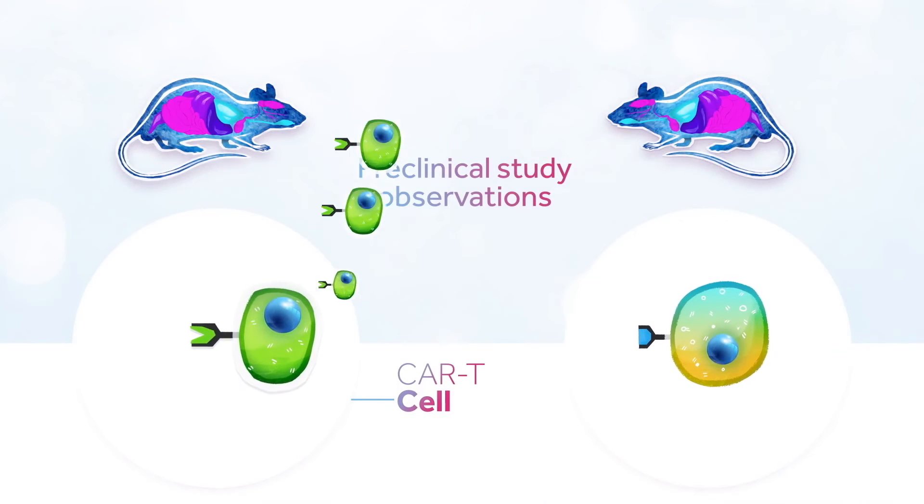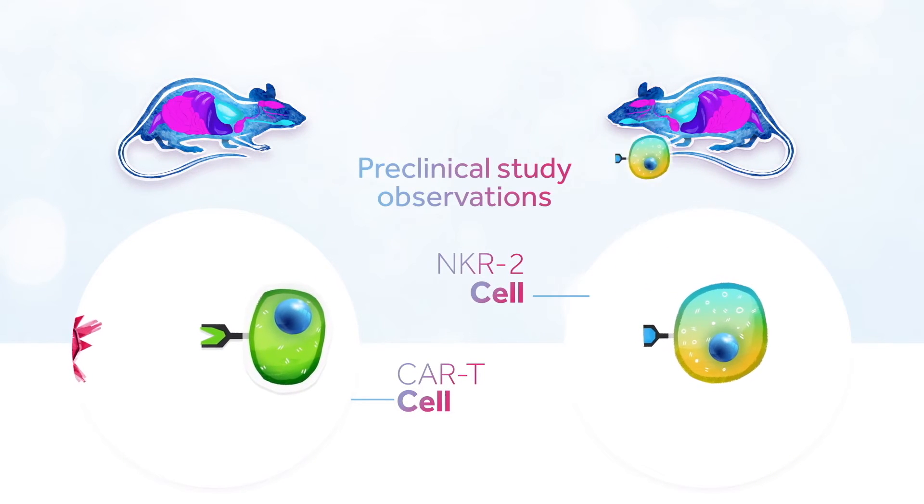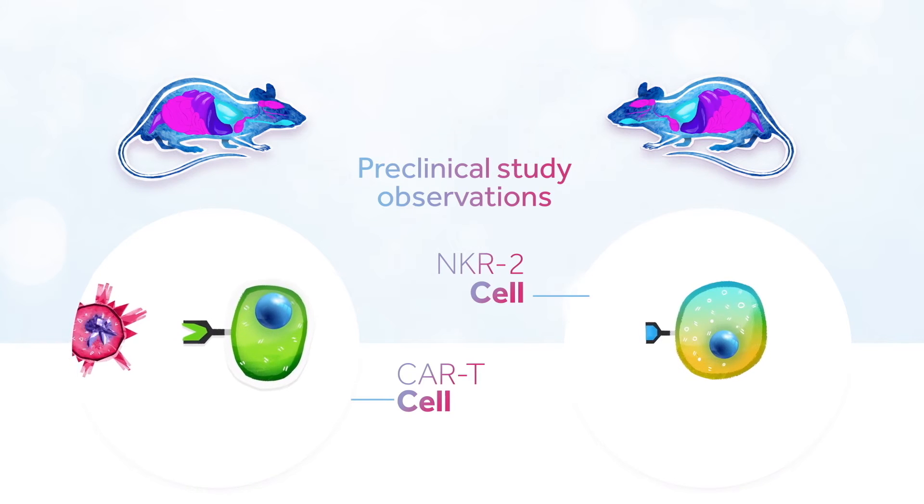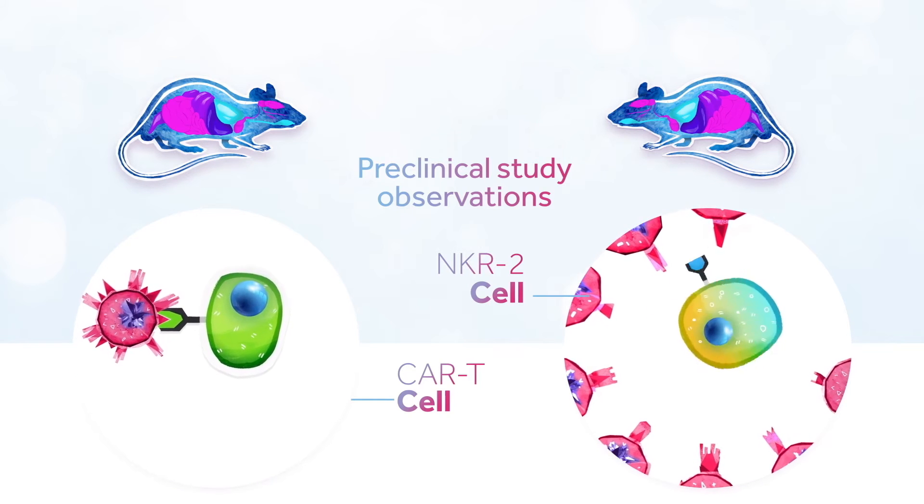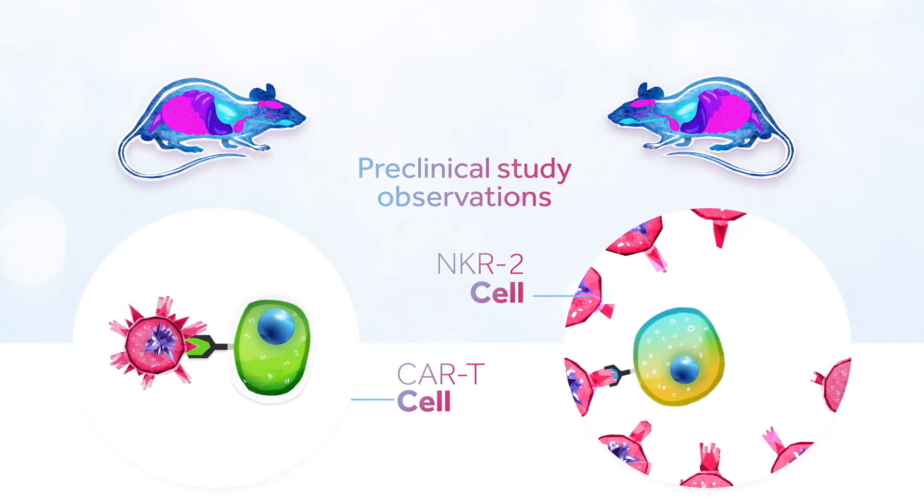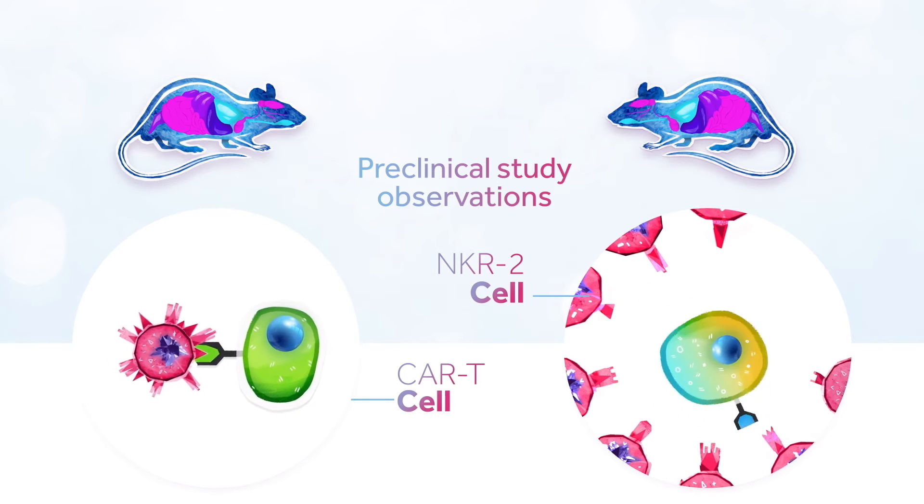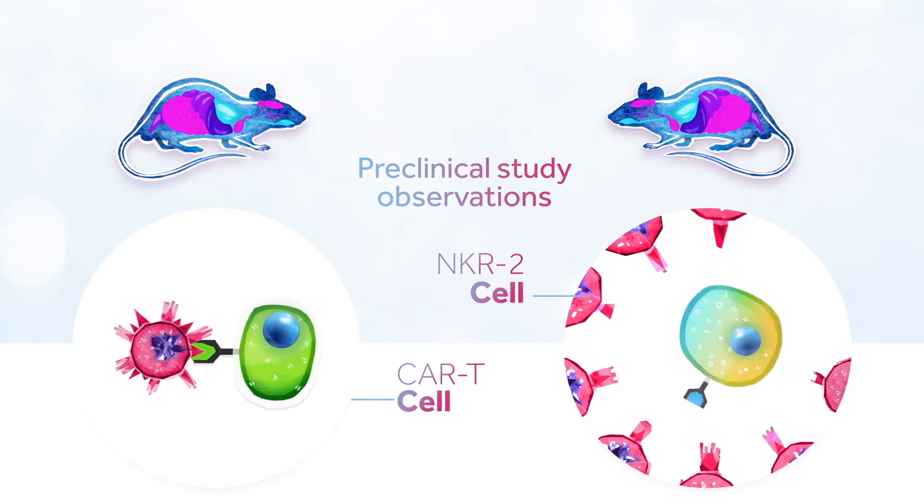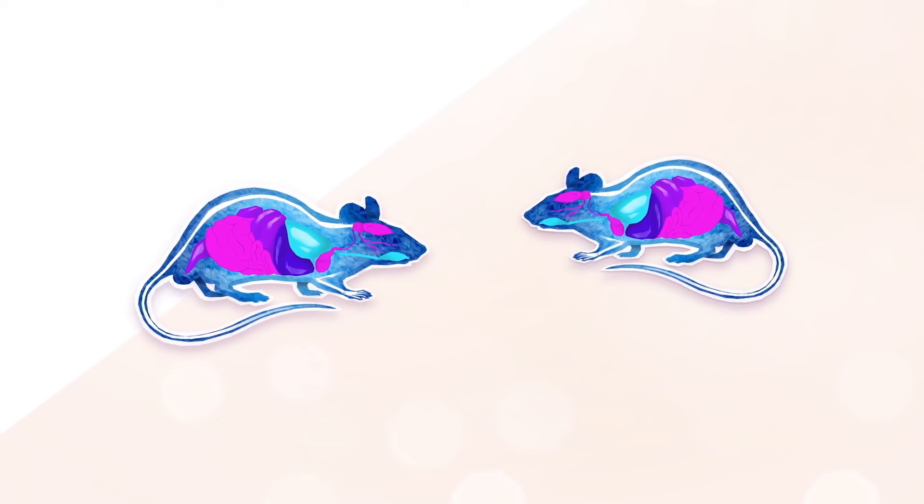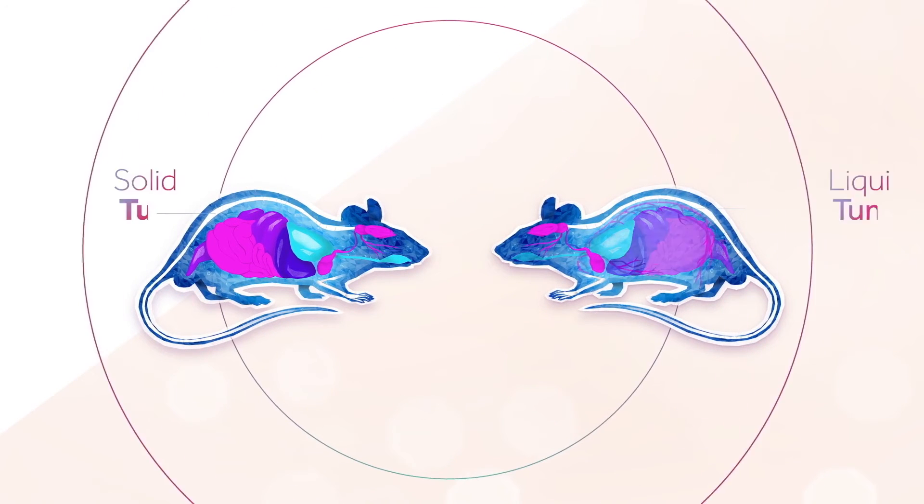Results from preclinical studies performed on mouse models have demonstrated that NCAR 2 displays unique therapeutic properties. Indeed, since the NKG2D receptor recognizes eight different types of ligands that are expressed by most cancer cell types, NCAR 2 eliminated cancer cells forming both solid and liquid tumors.